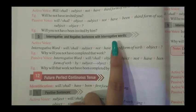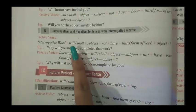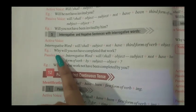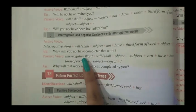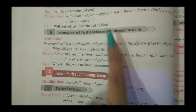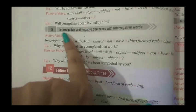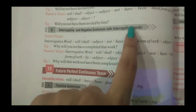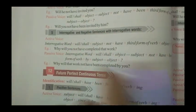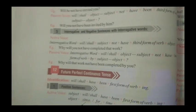In interrogative with question words — why, who, whom — these words are added at the beginning. The rest of the rules remain the same. The interrogative word comes first, then will/shall, then the subject, then 'not' or 'have', because we use 'not' for negative. In passive voice the same rule applies.